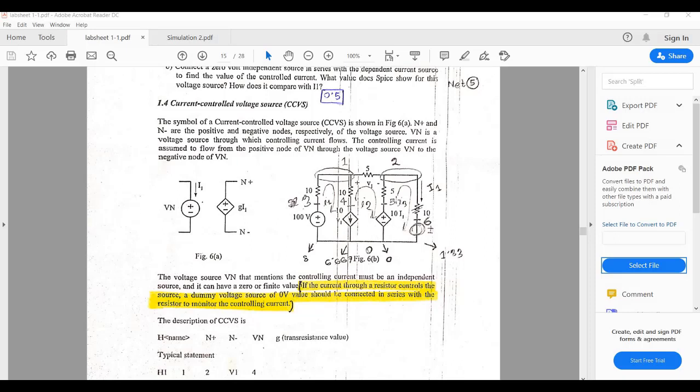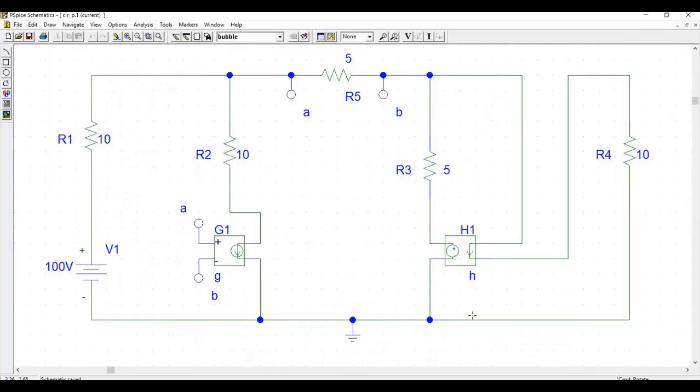actually current controlled voltage source, you can see 10I1. And this I1 is this current going to this 10 ohm resistor on the right side. And also you can see a voltage controlled current source here also. So let us see how we can simulate this circuit in P-Spice.